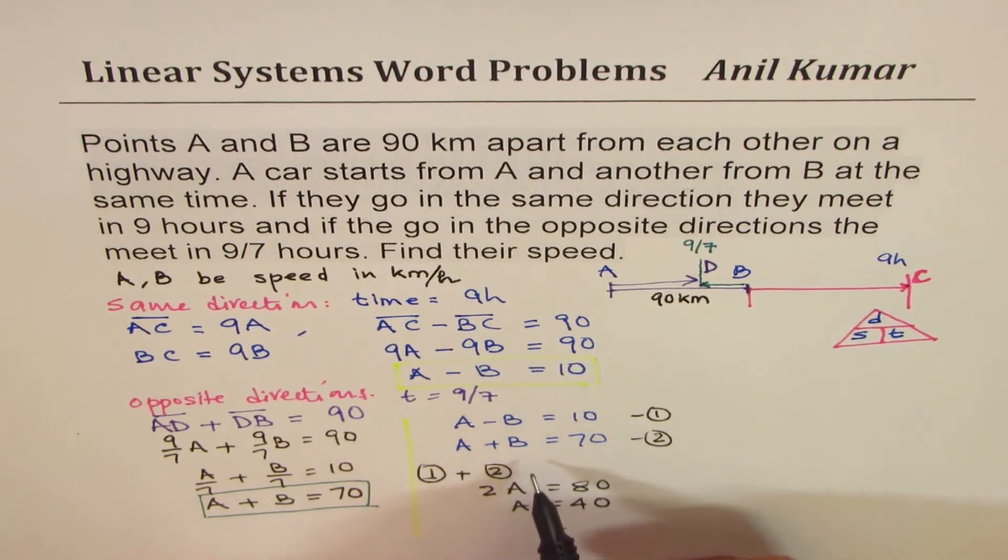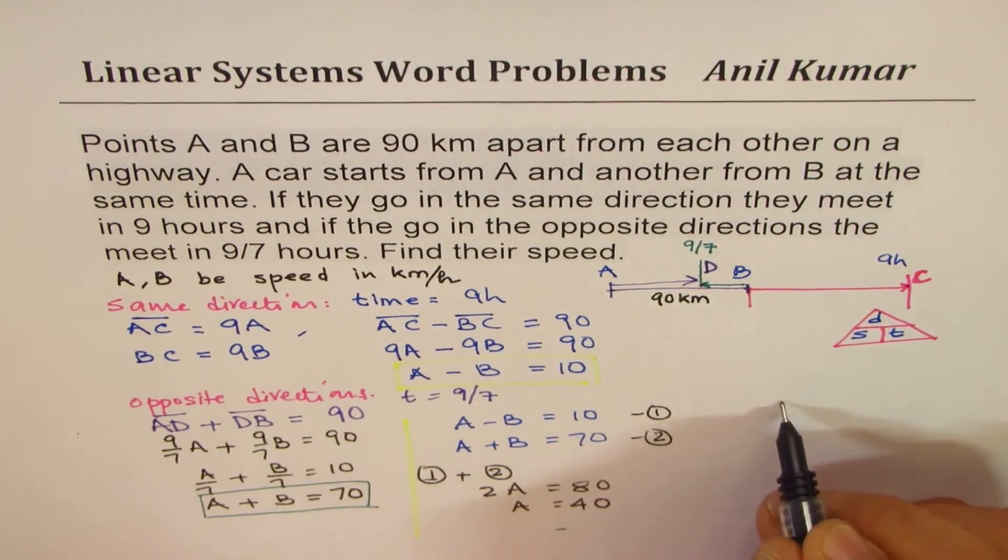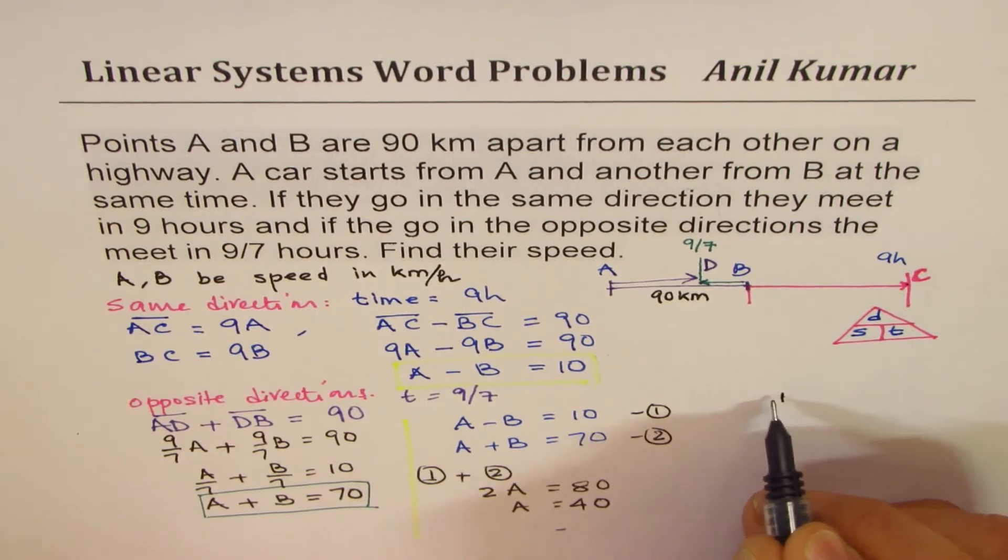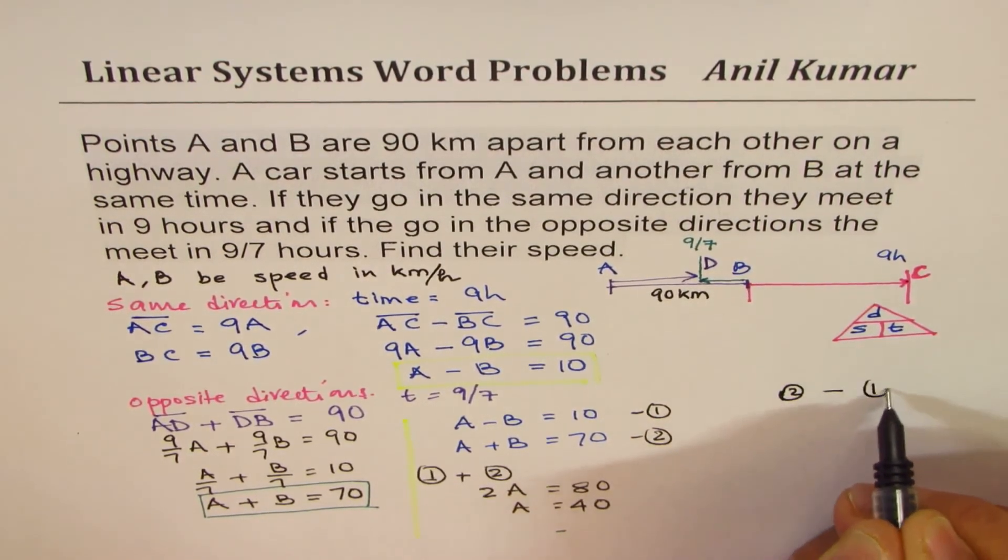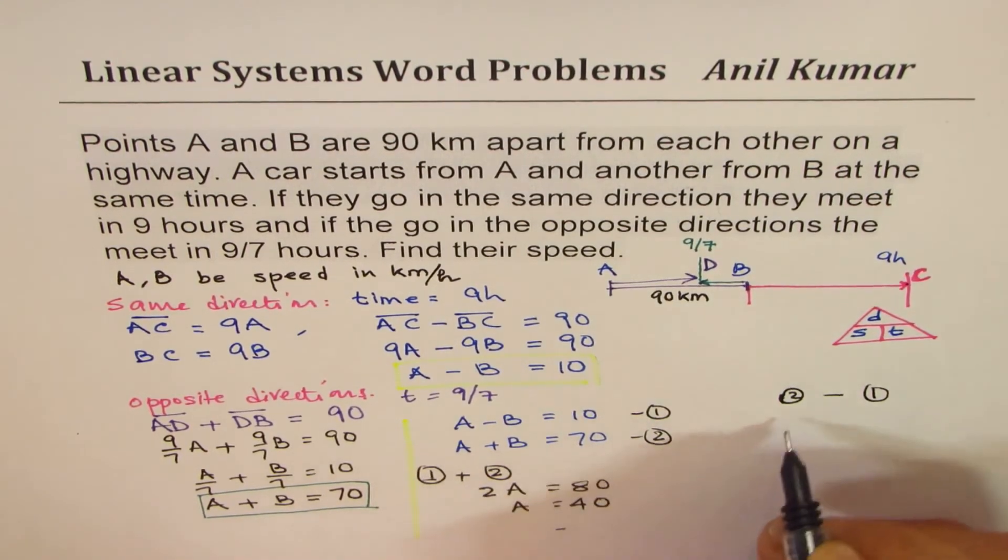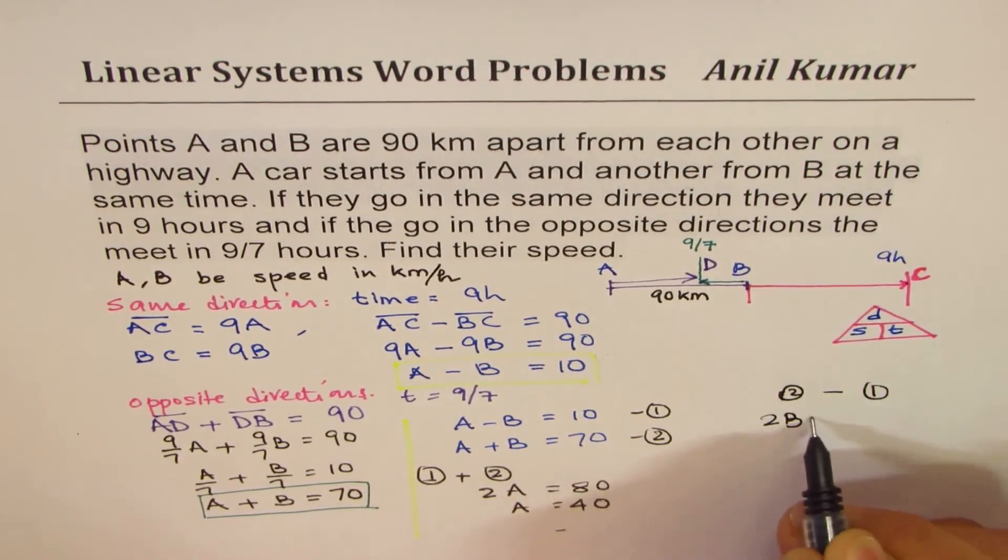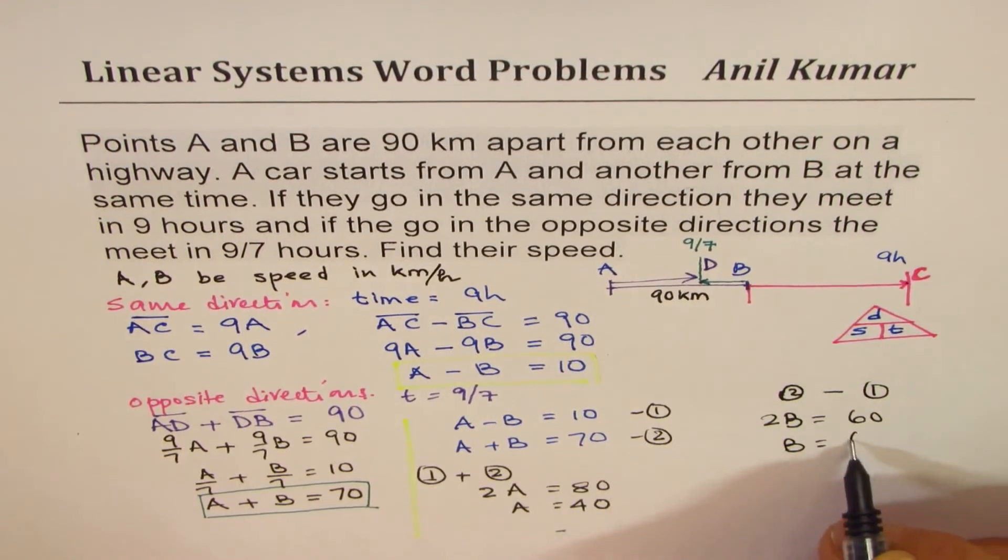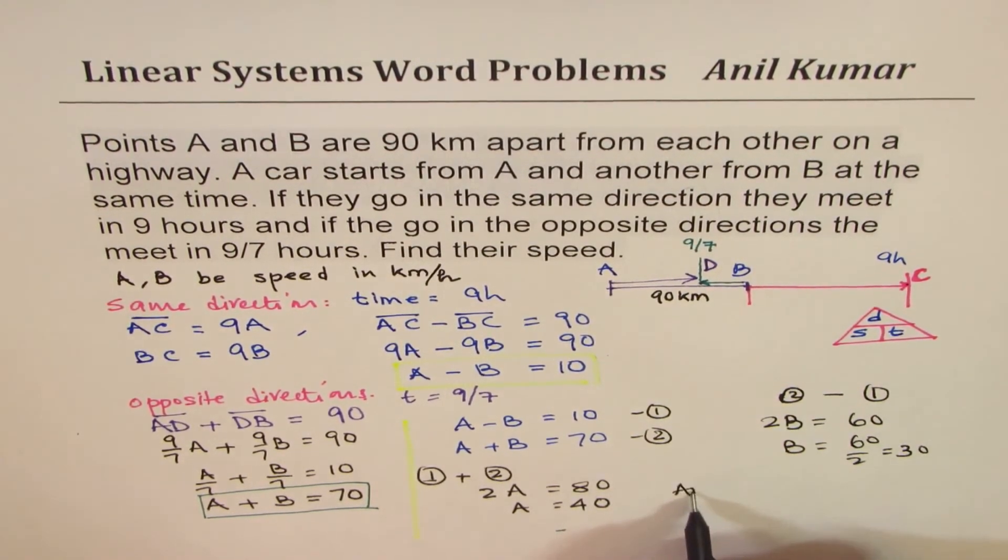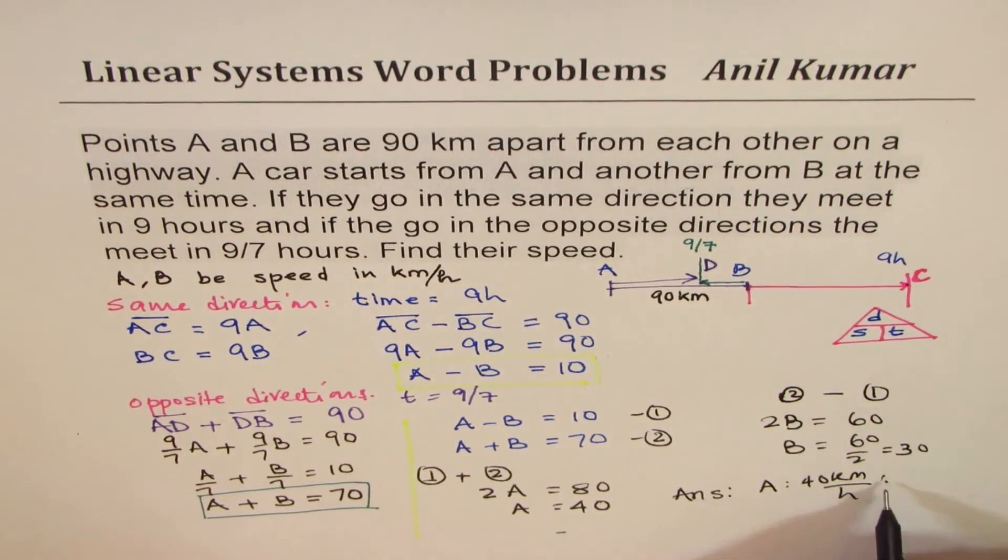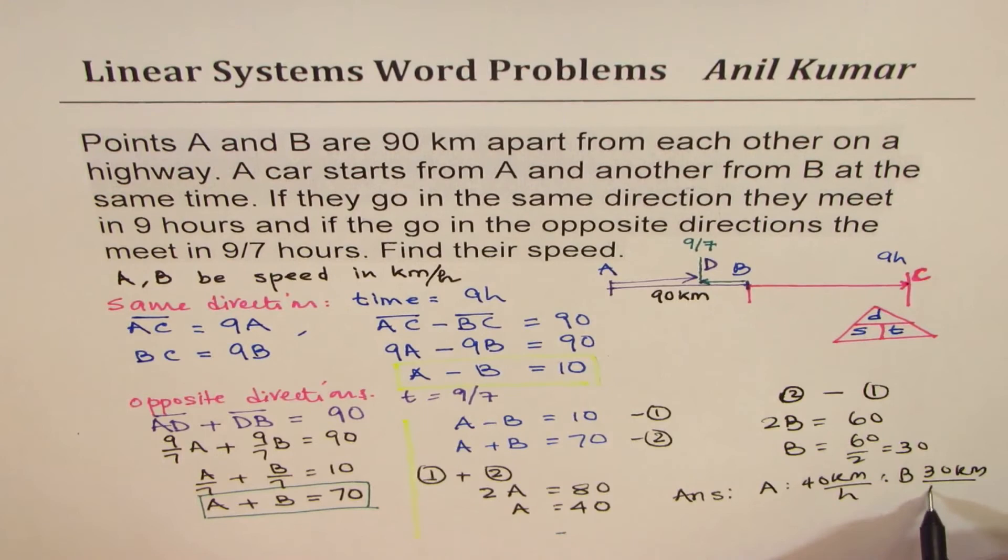If I subtract, so 2B, if I do equation 2, take away equation 1, because this is a higher number, so we get 2B equals to 60, or B equals to 60 divided by 2, which is 30. And so we get our answer that A is 40 kilometers per hour, and B is 30 kilometers per hour.